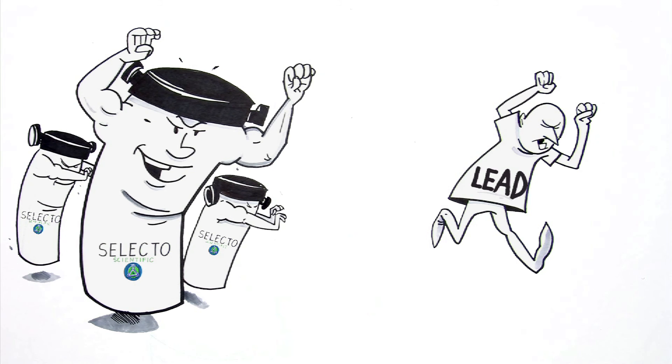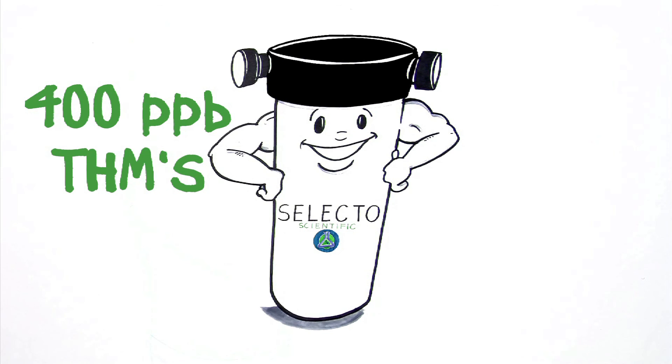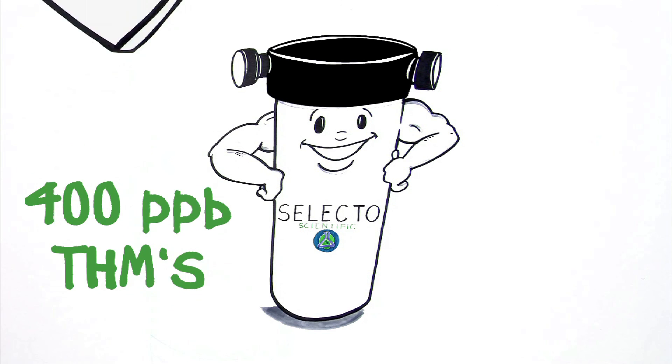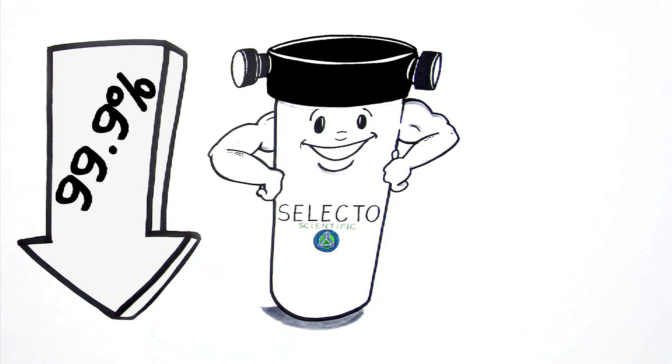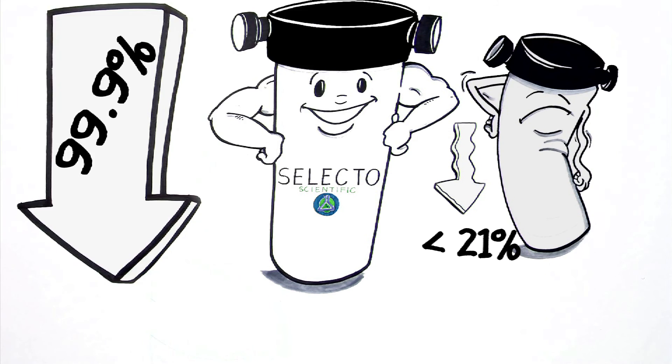In addition, a special barrier made of proprietary nanomaterial stops lead dead in its tracks. Even in the presence of 400 parts per billion of THMs, Selecto SMF filters reduce lead by 99.9%, compared to 21% or less for some NSF-listed carbon blocks.